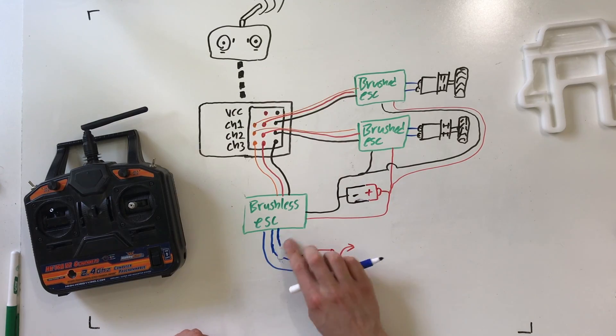Also I forgot to mention, but if the weapon spins in the wrong direction, just flip any of the two wires going to that motor and it'll reverse the direction.